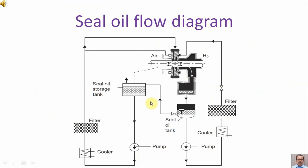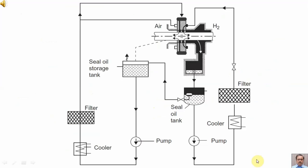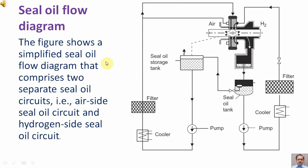Seal oil flow diagram. The figure shows a simplified seal oil flow diagram. There are two oil flow circuits: one is on the hydrogen side and the other is on the air side.